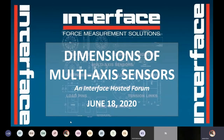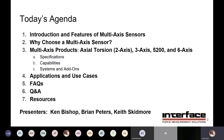Just to give you an outline of what we'll be talking about today: our agenda is going to start with an introduction on features of multi-axis sensors and why people are choosing this type of sensor in test and measurement. We'll go over product specifications, applications and use cases, address common FAQs, and then give an opportunity to answer any questions you may have. Your meeting microphone will be off, but if you have a question, you can unmute yourself or use the chat feature. Today we have presenters Ken Bishop, Brian Peters, and Keith Skidmore, who will be highlighting different aspects of multi-axis sensors.